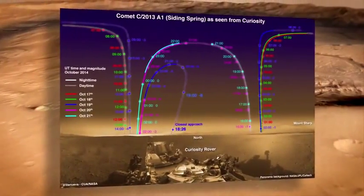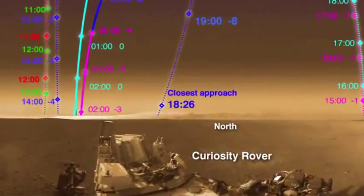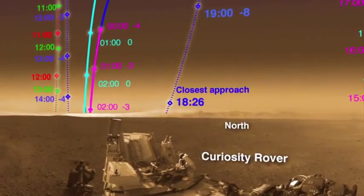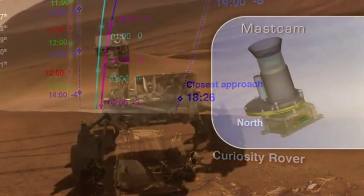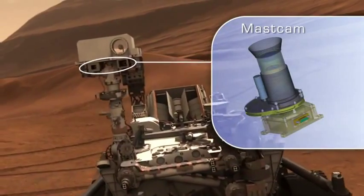At Gale Crater, NASA's Curiosity rover will turn its gaze skyward for several days surrounding the flyby. Curiosity's MastCam will study the comet's general features, while the ChemCam instrument will look at its chemical makeup.